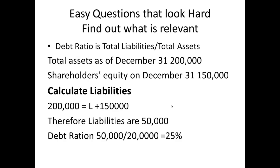Let's go to the next page where I've done this calculation. So the easy question that looks hard, find what is relevant. The debt ratio is total liabilities over total assets. Our total assets are $200,000. Our shareholders equity is $150,000. Therefore our liabilities are $50,000. The debt ratio therefore becomes total liabilities, $50,000 over total assets, and that's $200,000. And that equals 25%.